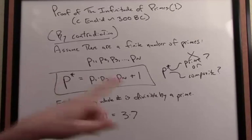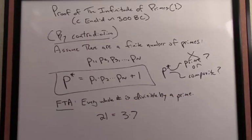P* isn't prime, so it has to be composite. So if it's composite, it's a whole number, essentially, and it must therefore be divisible by a prime.